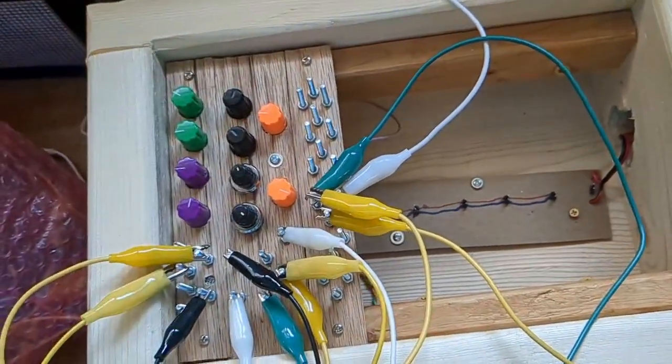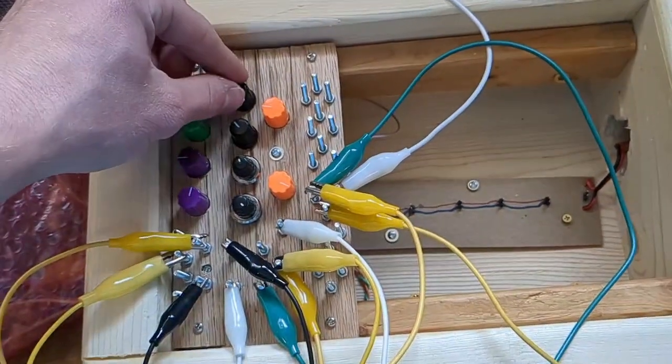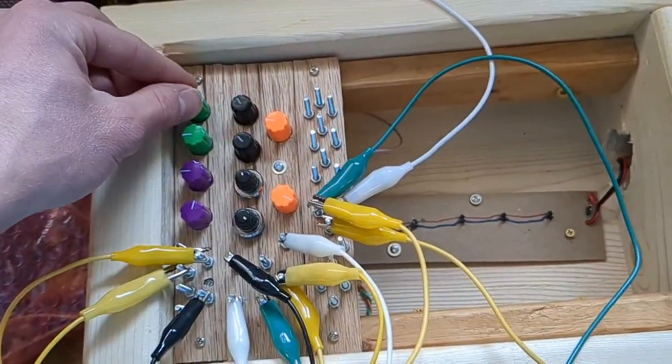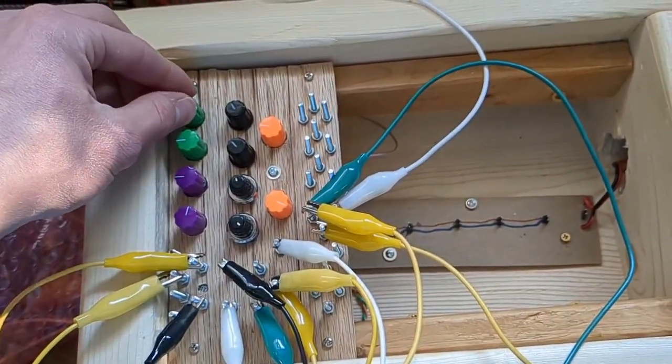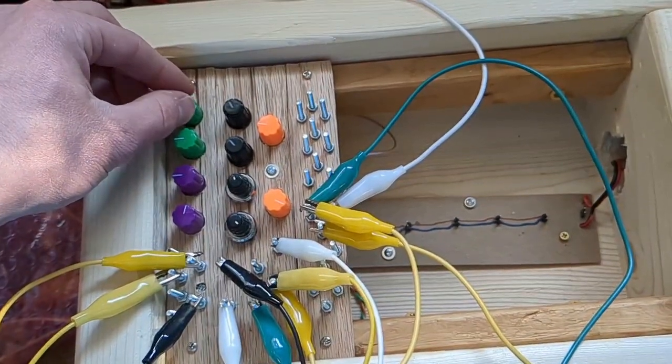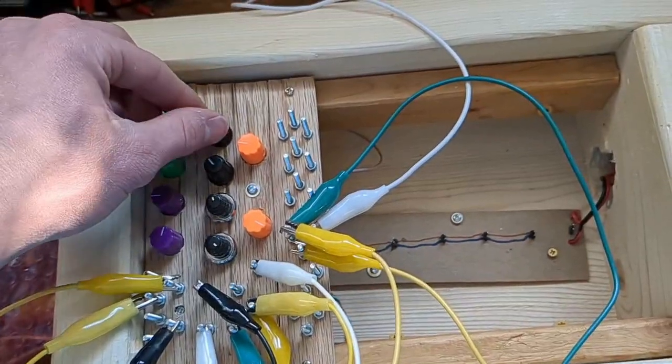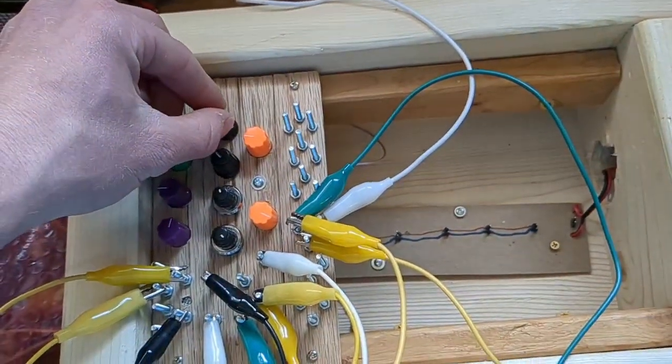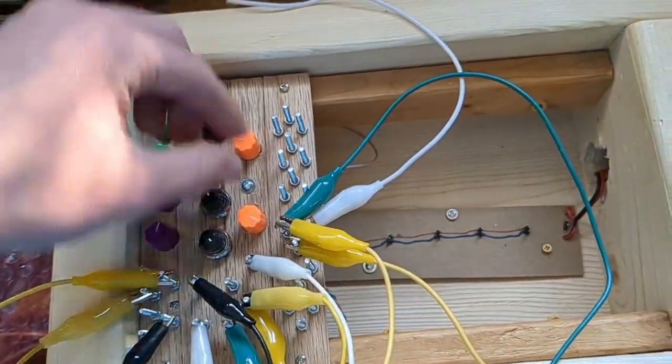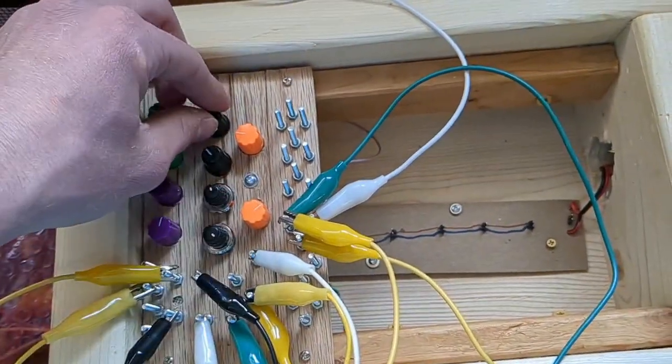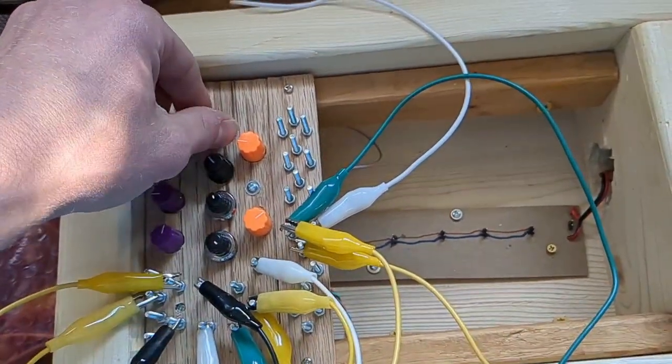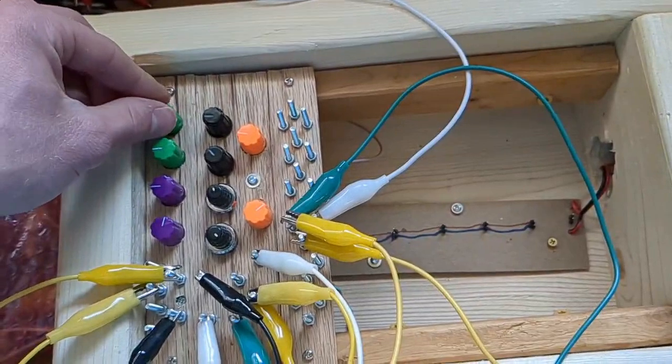Welcome to Episode 3 in my DIY 9V Modular Series. This module is a combination of a hard-synced square-wave oscillator, a voltage-controlled resonance low-pass filter with overdrive, and two LFOs, one square wave and one pseudo-triangle.